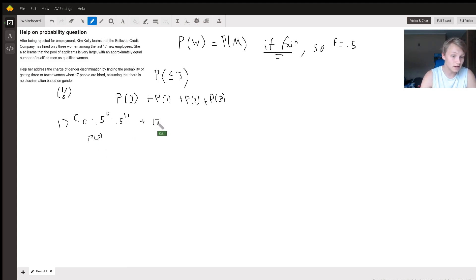Plus, here's the probability of one woman being hired. There are 17 choose 1 ways to do that times 0.5 to the one times 0.5 to the 16. Then the probability of two being chosen, so there are 17 choose 2 ways to hire two women out of a group of 17 times 0.5 squared times 0.5 to the 15. And then for three women being hired, there's 17 choose 3 ways to do that times 0.5 to the cube times 0.5 to the 14.